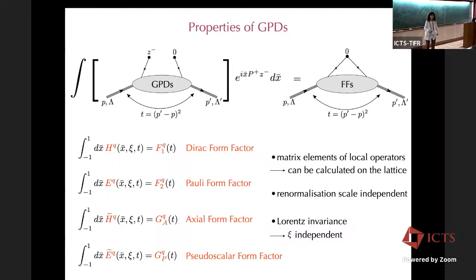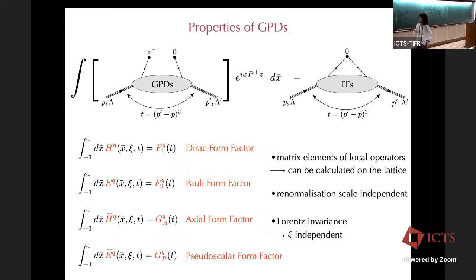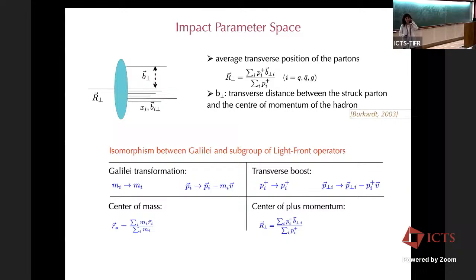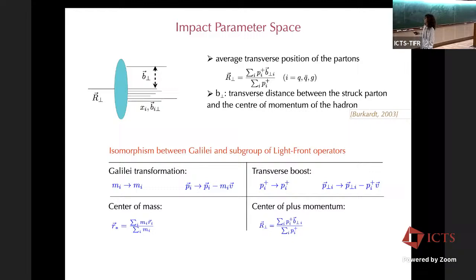We continue the discussion from this morning. We ended up discussing the relation between the generalized parton distribution and the form factor. Now I would like to show how it's possible to map out the parton distribution in the impact parameter space, and how this map is related to the GPD. We start by constructing this operator.